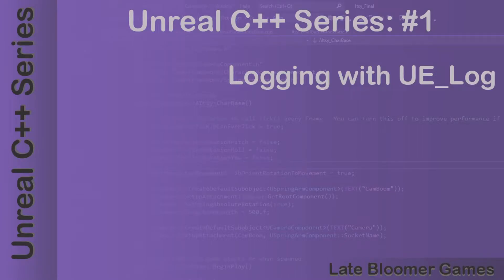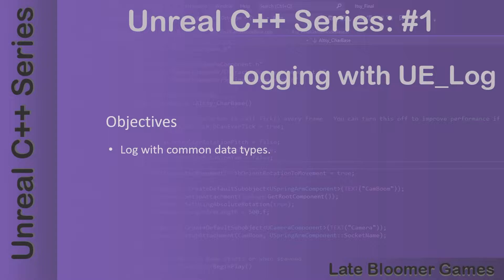I'm Ben Chapman and welcome back to my channel. This is the Unreal C++ series — this is the first one in the series and it's going to be about logging with UE_LOG. What we're going to do today is log some standard data types and also create a custom log category so we can identify what we're logging and where it's coming from. Should be a pretty easy tutorial, let's go ahead and get started.